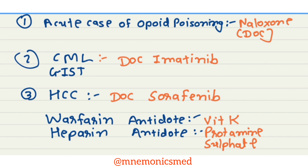Drug of choice for chronic myeloid leukemia and GIST tumor is Imatinib. Drug of choice for hepatocellular carcinoma is Sorafenib.